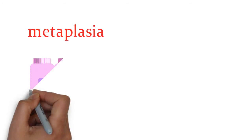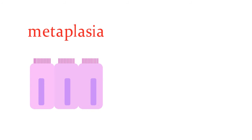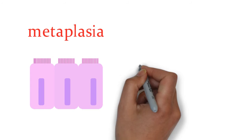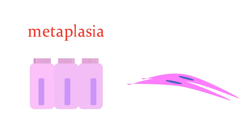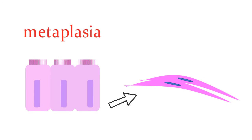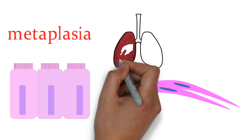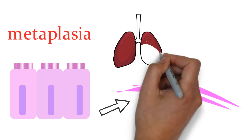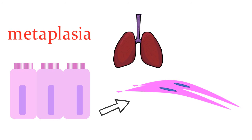Coming to the last cell adaptation. It is metaplasia. Metaplasia is an adaptation in which one differentiated cell, that is epithelial or mesenchymal, is replaced by another differentiated cell type. For example in cigarette smokers, ciliated columnar epithelium in trachea and bronchi are replaced by stratified squamous epithelial cells.